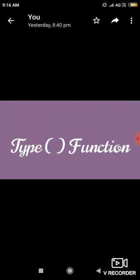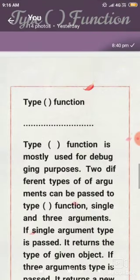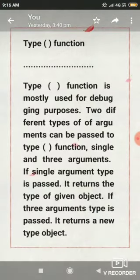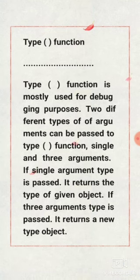Type function is mostly used for debugging purposes. Two different types of arguments can be passed to type function: single and three arguments. If single argument type is passed, it returns the type of given object. If three arguments type is passed, it returns a new type object.